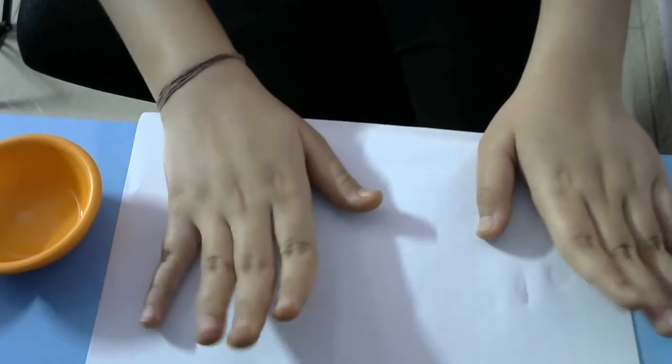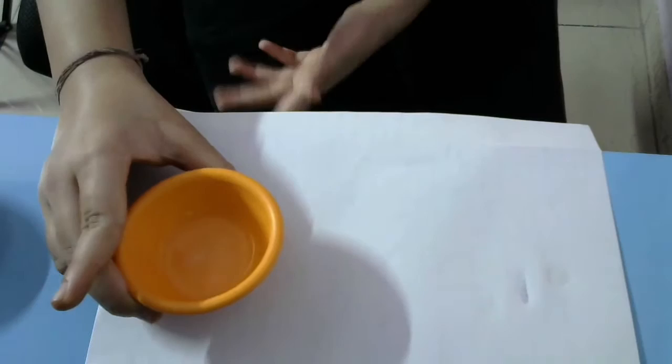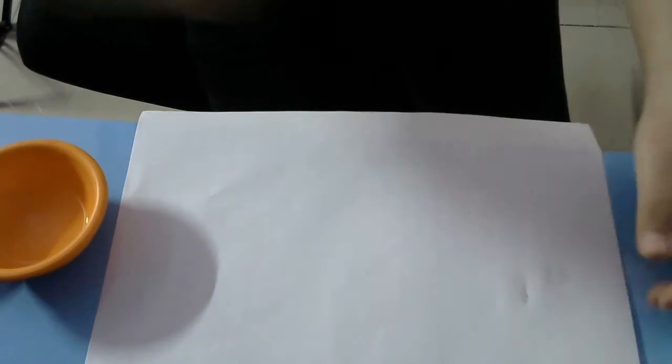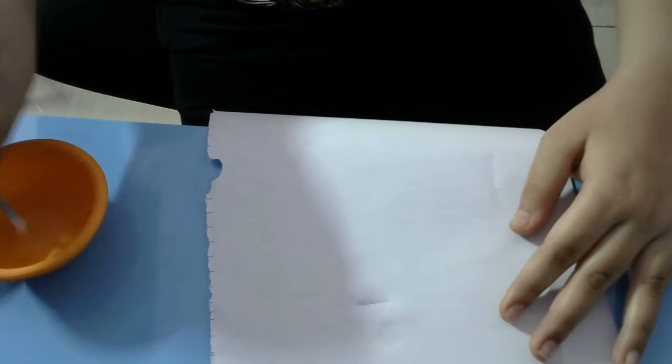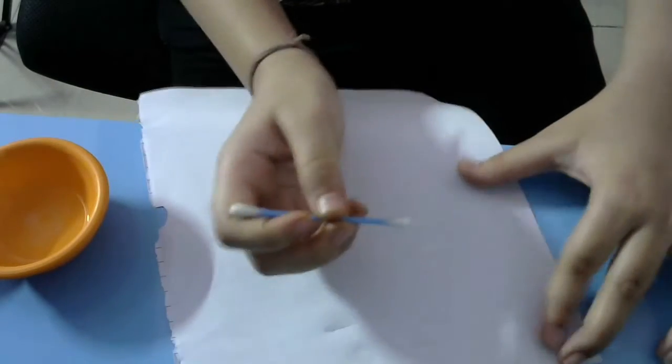For this activity I am taking first of all a blank white sheet and paste of baking soda solution with water and beetroot juice, brush as well as a bowl. So first of all I will write something here with the brush and the baking soda.